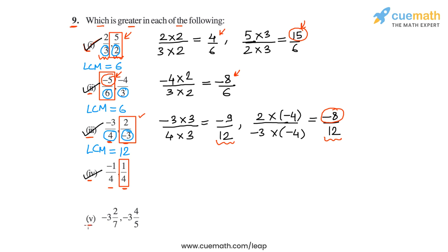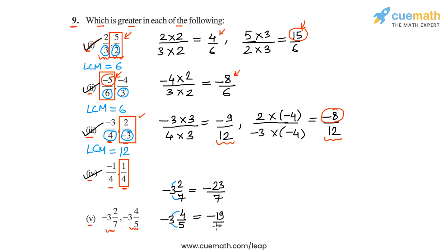Finally, in part 5, we have to compare -3 and 2/7 with -3 and 4/5. Both of these are written in mixed form, so let's first write them in normal form. So -3 2/7: 3 into 7 is 21, plus 2 is 23, so this will be -23/7. And similarly, -3 4/5: 5 into 3 is 15, plus 4 is 19, so we will have -19/5. The two denominators are 7 and 5, and the LCM of 7 and 5 is 35, so we'll write them as equivalent rational numbers with denominator 35.